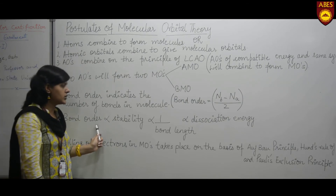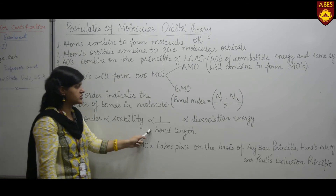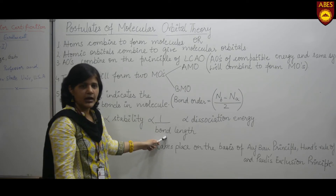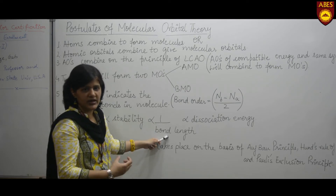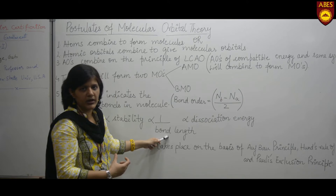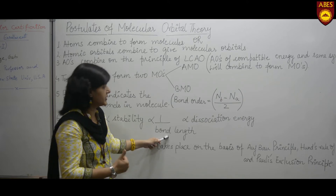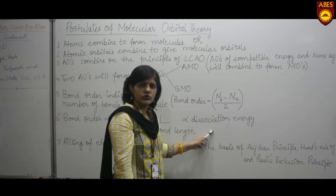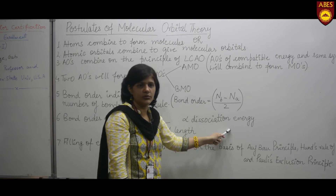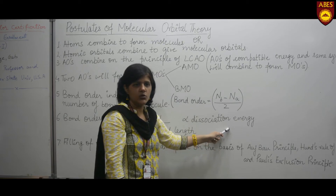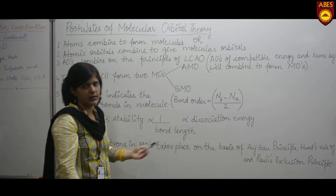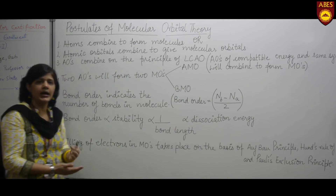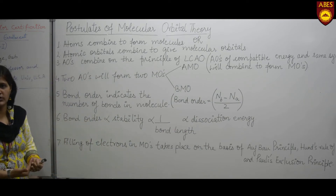Bond order is inversely proportional to bond length, meaning higher the bond order, lesser will be the bond length, and vice versa. It is also directly proportional to the dissociation energy of the molecule, which signifies that higher the bond order means higher the dissociation energy of that bond.